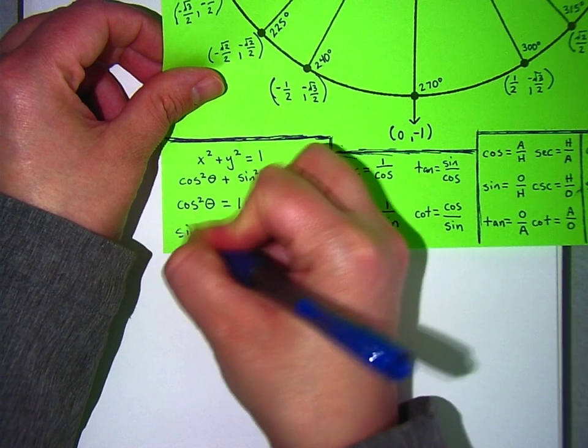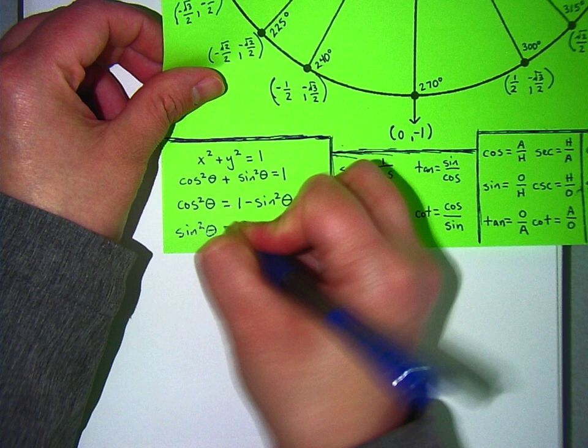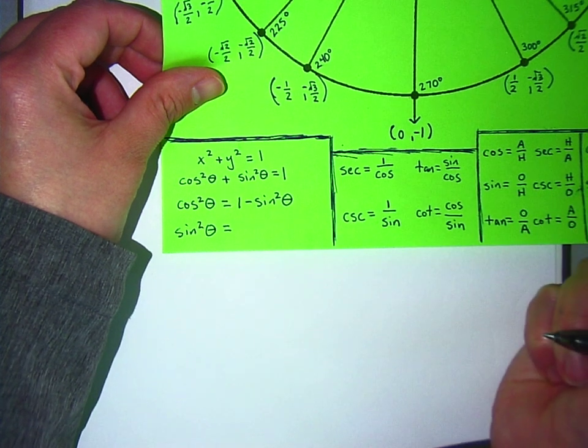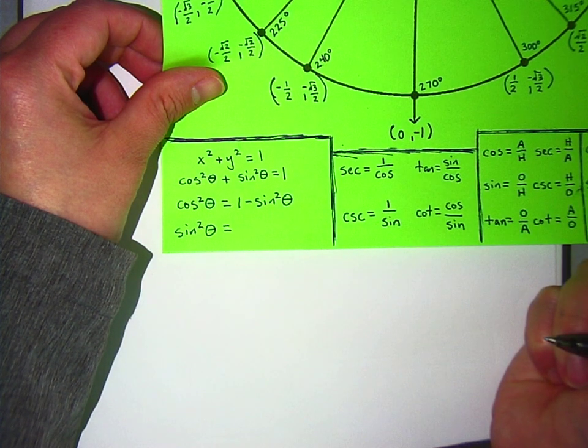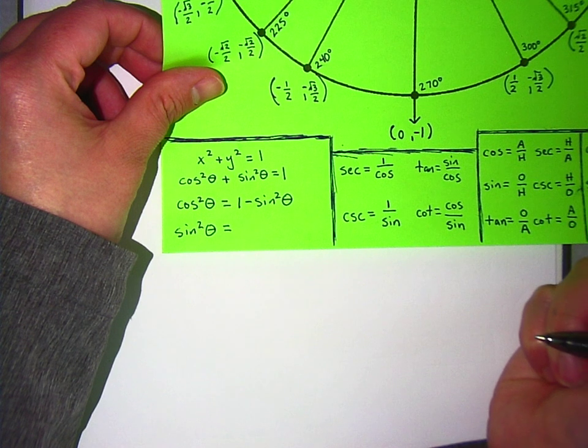Same thing. What if I wanted it to equal sine squared theta? You move the cos squared. The what? The cos squared theta.